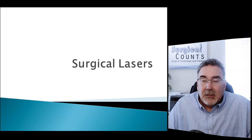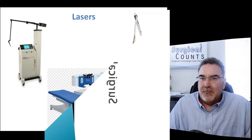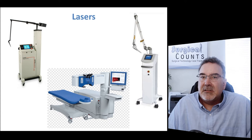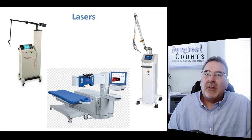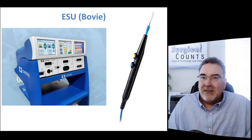Let's talk about surgical lasers. Surgical technologists need to understand a little bit of the physics behind lasers in order to understand why we choose certain lasers for certain procedures and not for other procedures. Lasers come in all different shapes and sizes, and different designs are designed to do different things. Just like the ESU, the electrosurgical unit, we're going to use lasers to cut tissue and cauterize or coagulate the tissue around it.